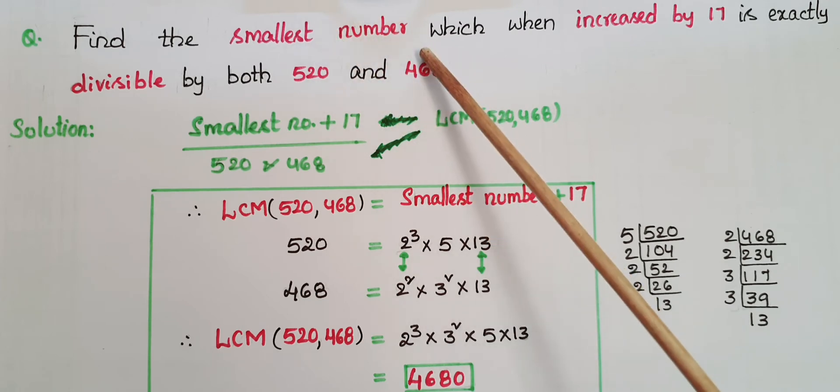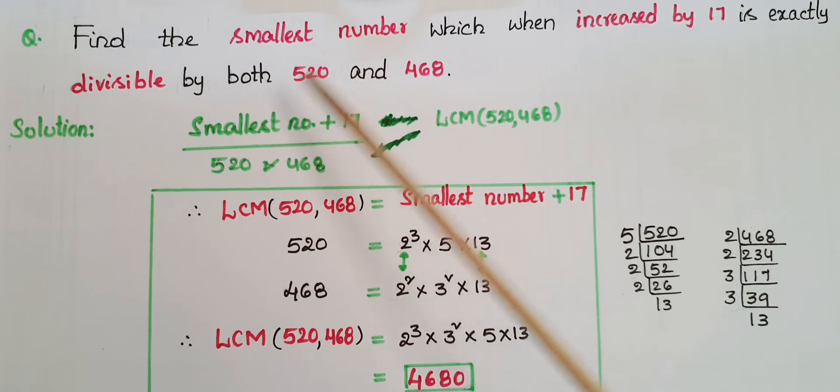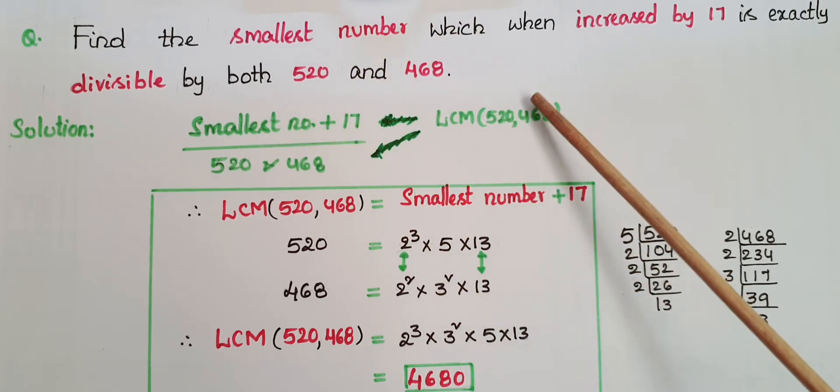So here we have to find a smallest number when increased by 17 that should be exactly divisible by these two numbers, 520 and 468. So here smallest number plus 17 is exactly divisible by these two numbers.